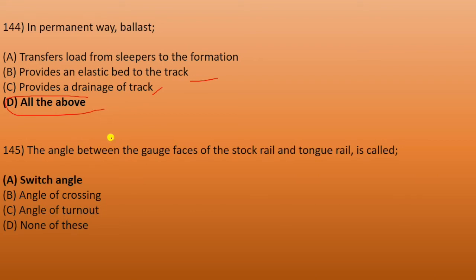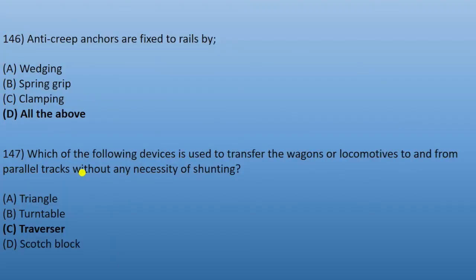Next: the angle between the gauge faces of the stock rail and the tongue rail is called the switch angle — we read this in part 2 in railway terminology. Next: anti-creep anchors are fixed to rails by wedging, spring grip, and clamping — so all of the above. Three methods are used for fixing anti-creep anchors.